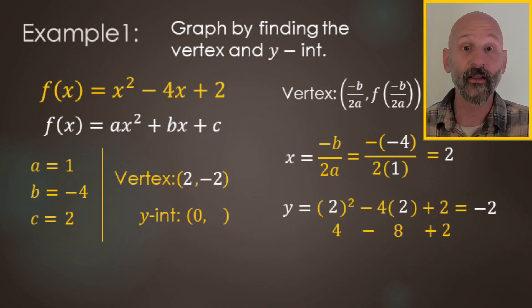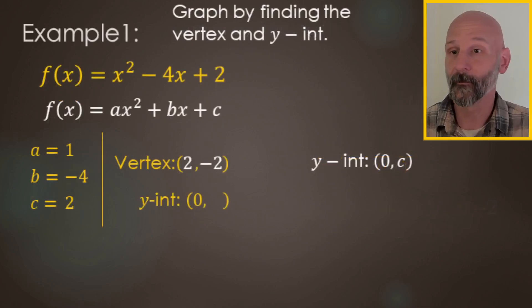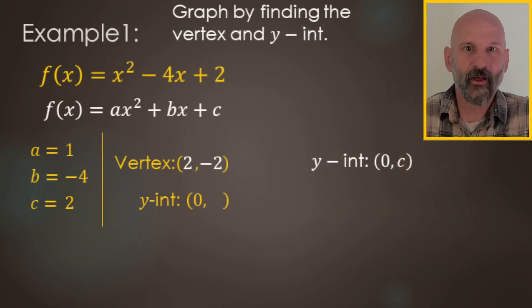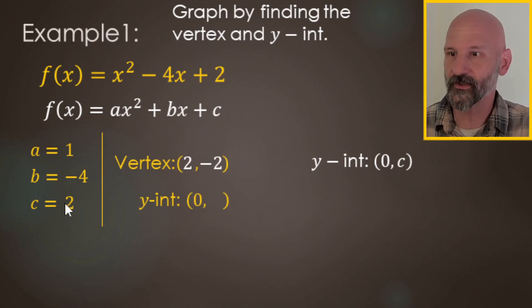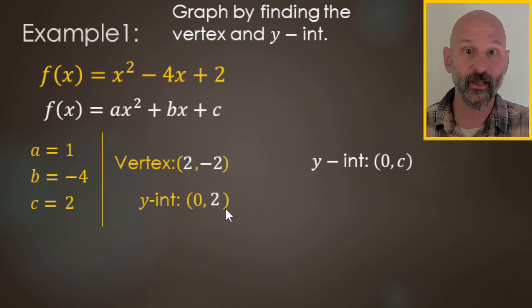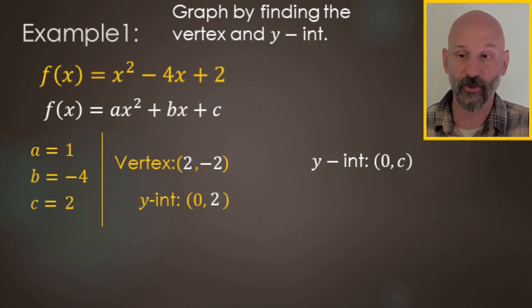Next, find the y-intercept. The formula is super easy: (0, c). What was c? c was 2. So the y-intercept is 2 — right there, your constant term.